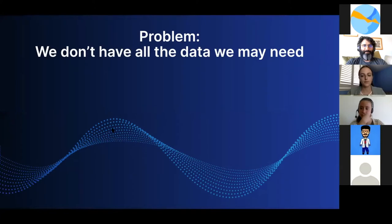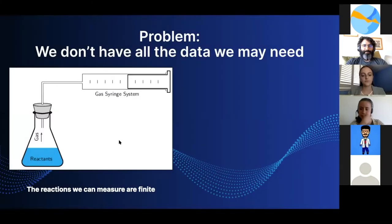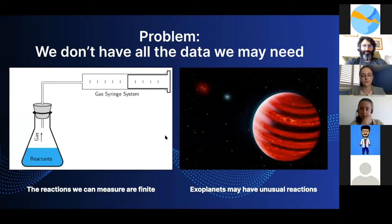But the problem is that these models heavily depend on the input data we give them, and we don't always have all the data we may need. The reactions we can measure on Earth are finite, and exoplanets might have unusual reactions we can't measure or simply haven't thought of measuring.